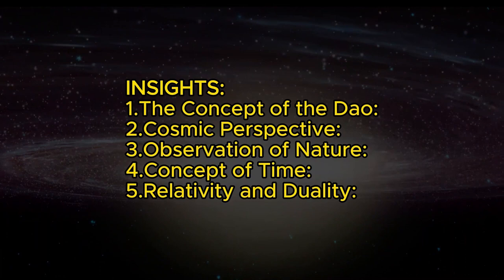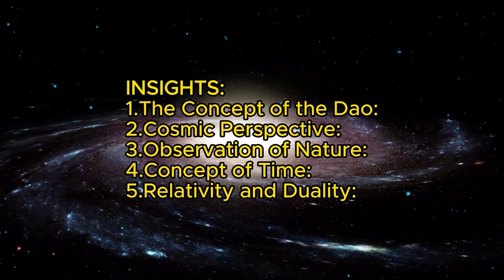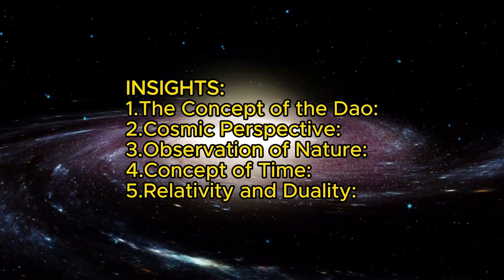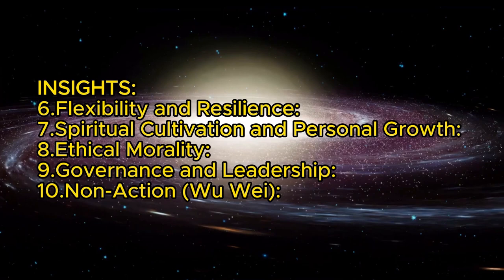5. Relativity and duality. The Tao Te Ching introduces the concept of yin and yang, illustrating how opposites are interconnected and interdependent in the natural world. It emphasizes the relative nature of things, that all qualities exist only through their opposites, such as beauty and ugliness, good and bad. 6. Flexibility and resilience. The text uses metaphors like water to illustrate the value of being soft and flexible yet strong and persistent. It teaches that the soft and yielding will overcome the hard and rigid.